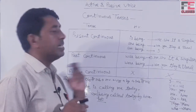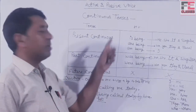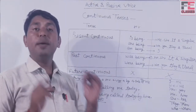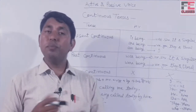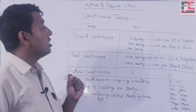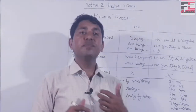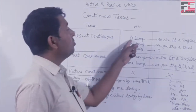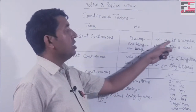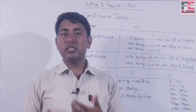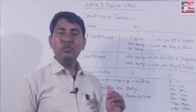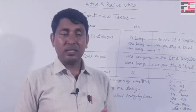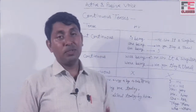When we talk about present continuous passive, the helping verbs used are: is being, am being, and are being. Am being is always used with the subject 'I'. Is being is used with singular subjects (he, she, it), and are being is used with plural subjects (we, you, they).